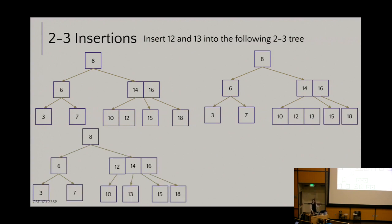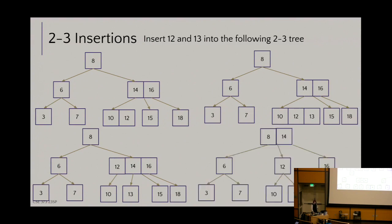Now the 12 percolates up — but that overloads the parent. Do I need to keep going? Yes. Which node percolates up from that parent? 14. There we go: I've just added two things and did not extend the height of the tree.